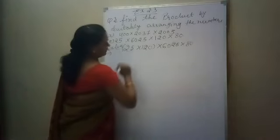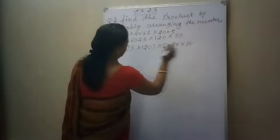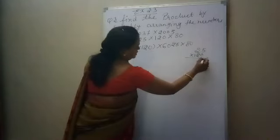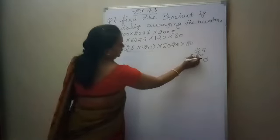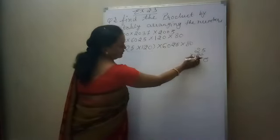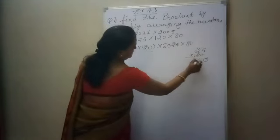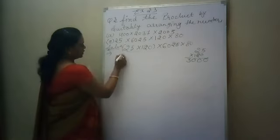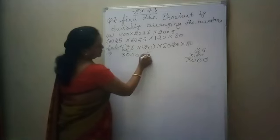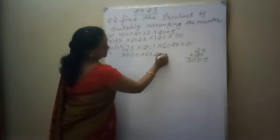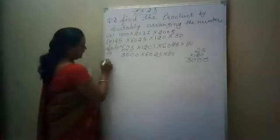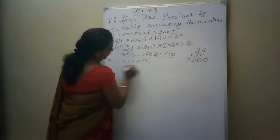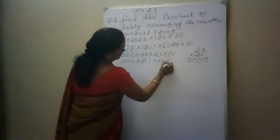So first we will multiply 120 by 25. When we multiply 25 by 120, there is a 0 so we can put it here. The number 12 is there and we know the 12 times table well — 12 fives are 60. So the answer will be 3000. Then that is multiplied by 6025, and it is multiplied by 80.